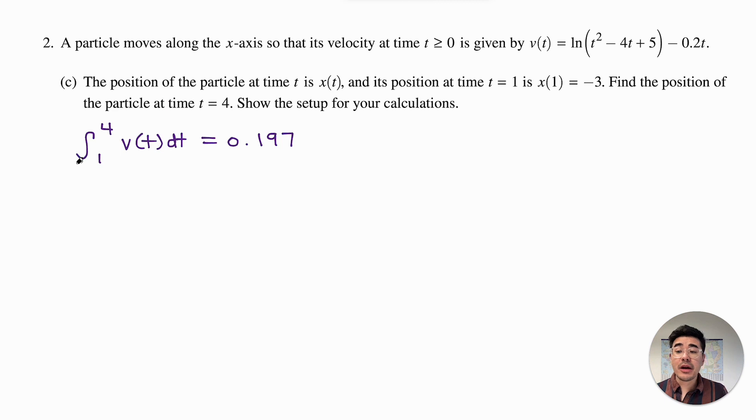Now if you stop there, you're not going to get full credit for this question because remember that the integral from 1 to 4 represents the displacement of the particle. So we need to add our starting point to find our final position. So x of 4 is equal to 0.197 plus x of 1. We started at a certain point and we added this much to our final point. So then we start at negative 3. So then our final answer would be 2.803.